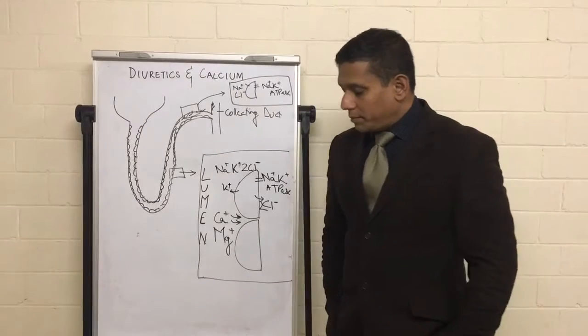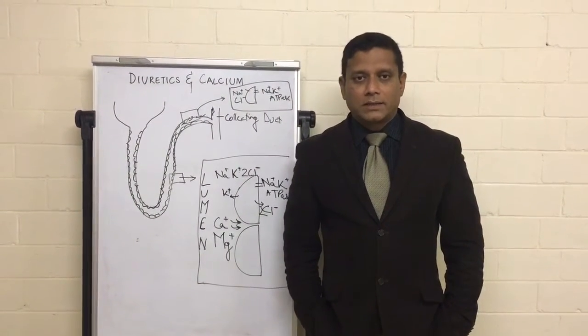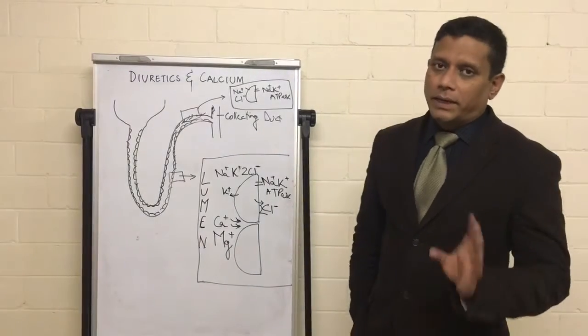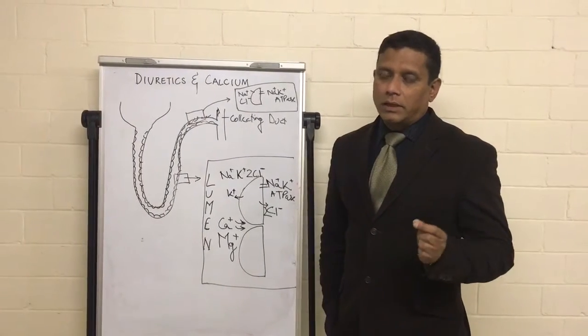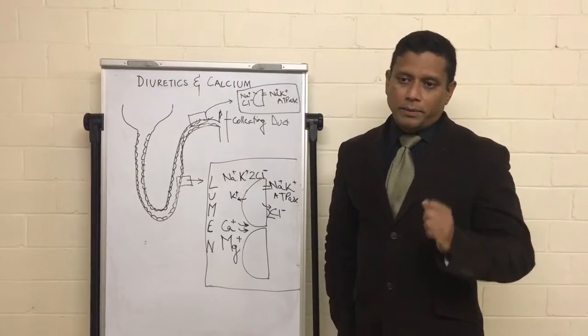Now before we go there, how do all diuretics act? One sentence answer of their mechanistic action: they all inhibit sodium reabsorption in the tubular epithelial cells.